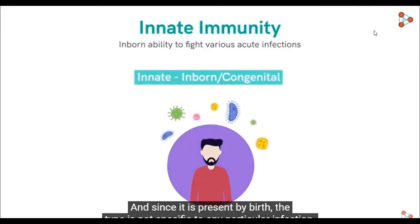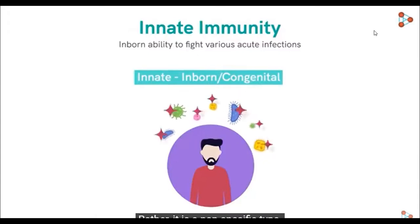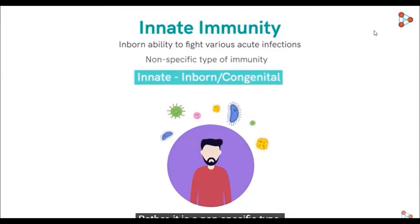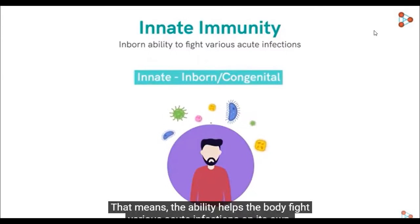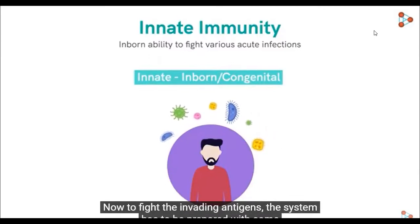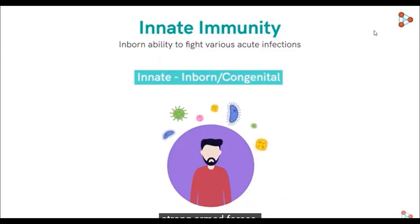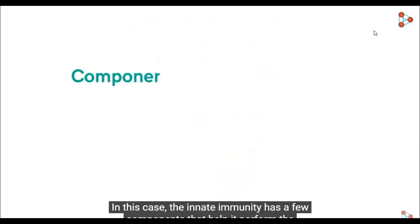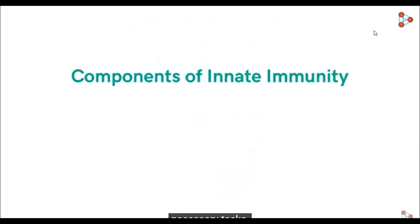And since it's present by birth, this type is not specific to any particular infection. It's a non-specific type. That means the ability helps the body fight various acute infections on its own. To fight off innate antigens, the system has to be prepared to put some strong common forces. In this case, the innate immunity has a few components that help perform the necessary tasks.